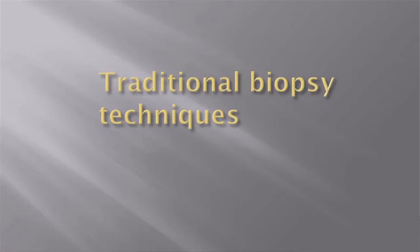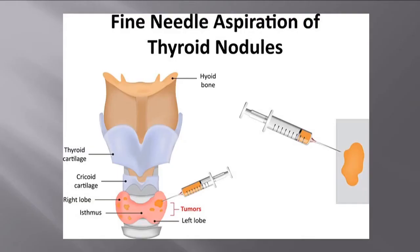Let's start off with our traditional biopsy techniques. This is fine needle aspiration, and in this case I used thyroid as an example. Traditionally, what's been done is you use some anesthetics such as lidocaine to numb up the tissue, and you use a 23 to 27-gauge needle to aspirate the content. That aspirate is usually sent for studies like pathology, cytology, and micro.